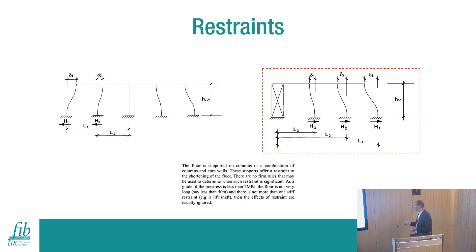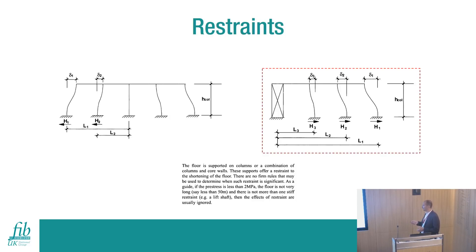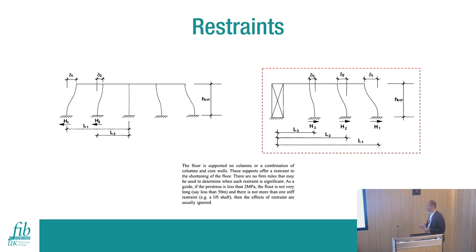TR-43 also suggests that if the level of pre-stress is around 2 MPa, the floor is not very long — less than 50 metres — and there is only one stiff element, like in the three examples shown earlier, we can basically ignore the effects of restraint.